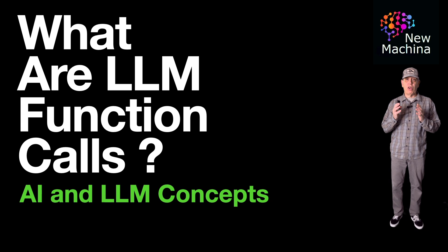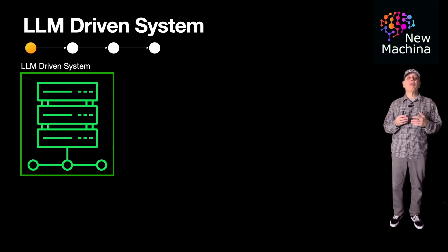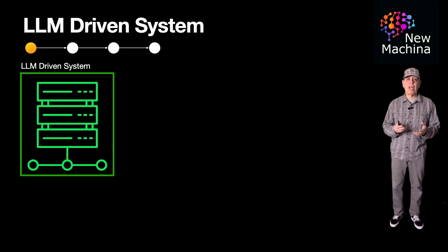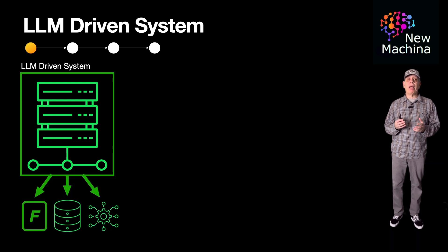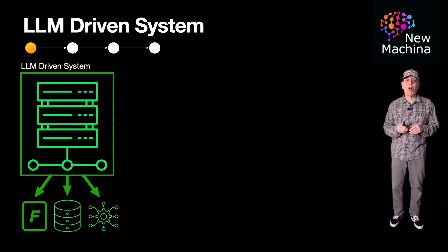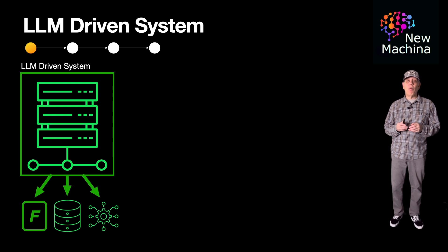So how does LLM function calling work? Let's first look at the lifecycle of an LLM function call. Here is our LLM-driven system — a system you build that runs on your laptop or in a container on a virtual machine in your data center or up in the cloud. For example, you might implement this using LangChain, LangGraph, or LlamaIndex. Just to give you a heads up, sometimes functions in this context are also referred to as tools, but if you see either of these terms in this video, we're talking about the same thing.